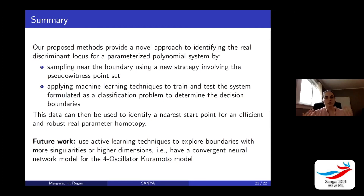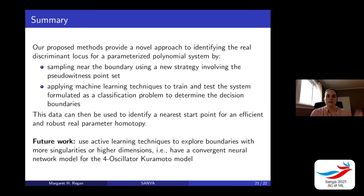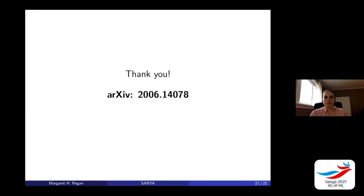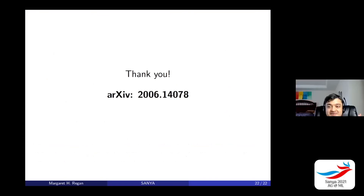As a summary, we proposed a method using a novel sampling technique involving points near the decision boundaries to guide learning, applying machine learning to train and test a system that formulates parameterized polynomial system solving as a classification problem to find the discriminant locus. We then use the location of decision boundaries and classification of points by number of real solutions for a real parameter homotopy to drastically reduce computation time. In the future, we hope to apply active learning techniques to explore problems in higher dimensions — for example, the neural network didn't converge for the four-oscillator Kuramoto model — and to extend further beyond that.